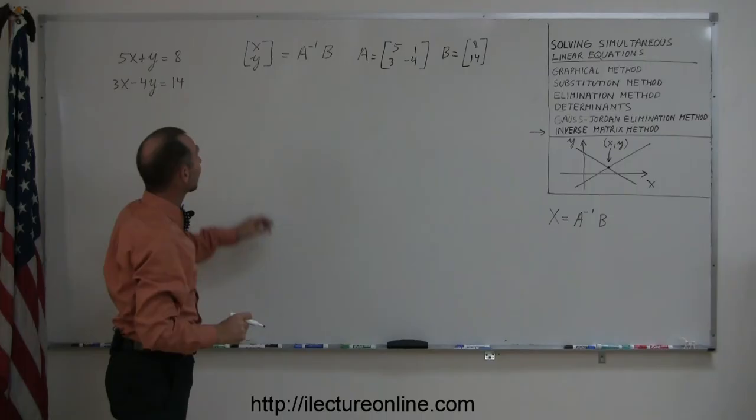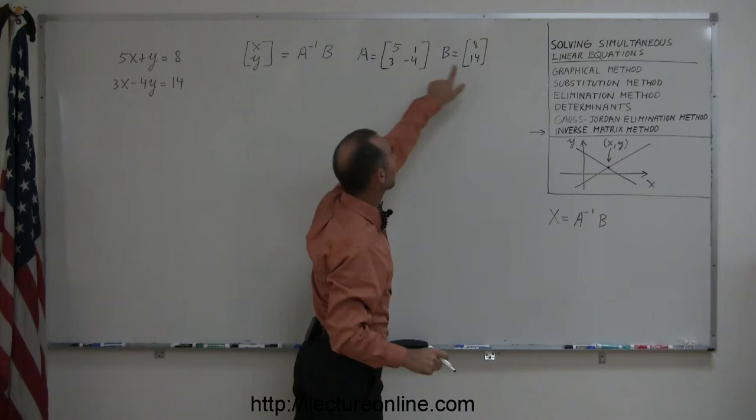Now, of course, to find x and y, we have to find the inverse of A and multiply times the matrix B. Matrix B is already here. How do we find the inverse of A? Well, we do that by the following definition.